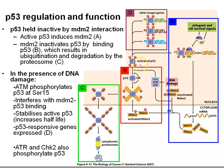p53 is a tetrameric protein — four protein subunits stuck together — and it's initially made as an unphosphorylated version. When it's activated, it becomes phosphorylated. When p53 is produced, it binds to its target genes: cell cycle arrest — that could be the p21 gene; apoptosis — that is typically the Bax gene; and various DNA repair genes.